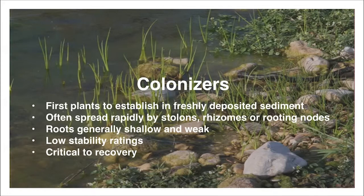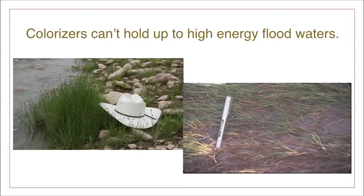Colonizers are characterized by their traits. They are often the first plants to establish in freshly deposited sediment. They spread rapidly by stolons, rhizomes, or by rooting at their nodes. Colonizer roots are generally shallow and weak, with low stability ratings. But they are critical to recovery when a riparian area has been degraded or disturbed, like following a flood. In short, colonizers just can't hold up to high-energy floodwater.